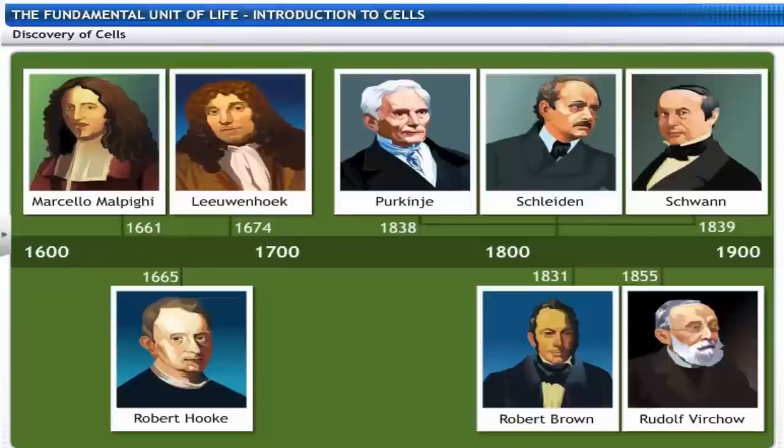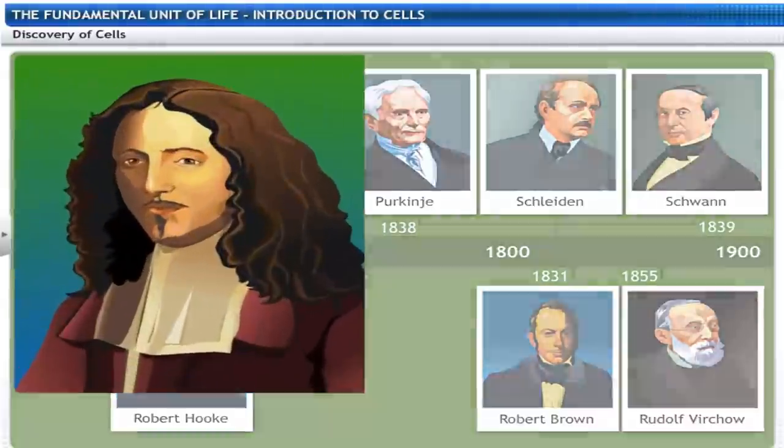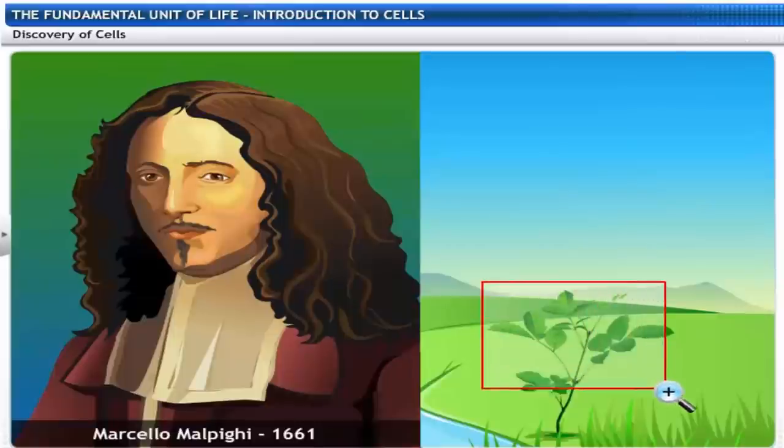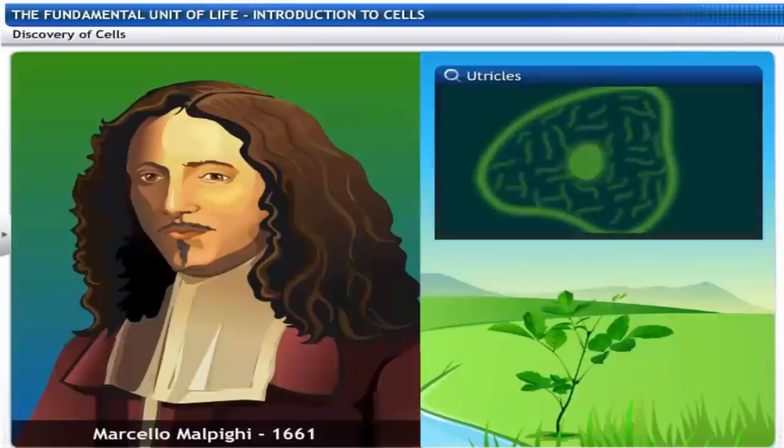The discovery of cells dates back to the 17th century and is associated with the invention of microscopes. Marcello Malpighi, a microscopist, proposed that plants are made of tiny structural units called utricles.